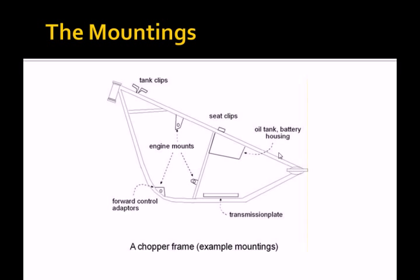Finally, there needs to be a seat clip, which will be fixed to the top of the wishbone tubes, somewhere in front of the center post, and onto which the seat clips.